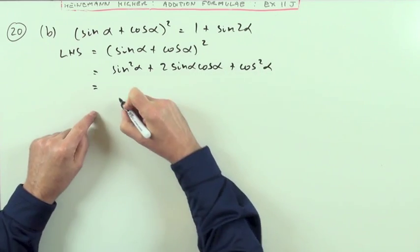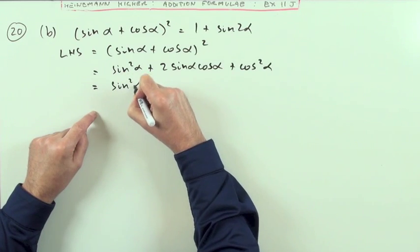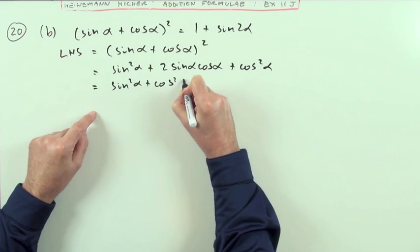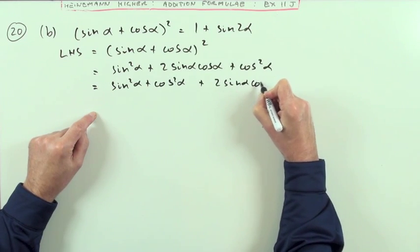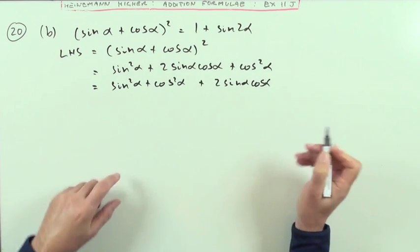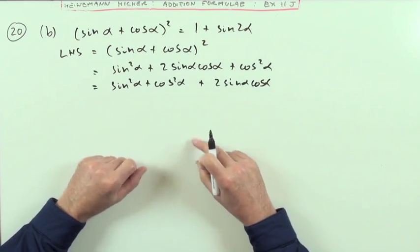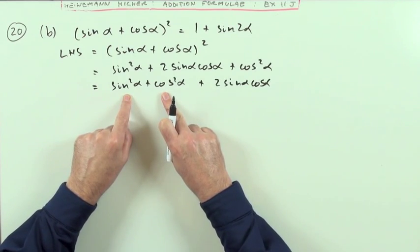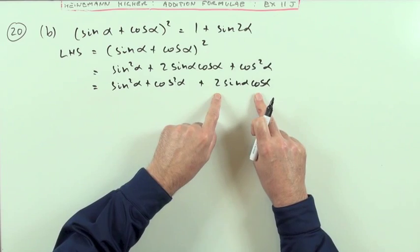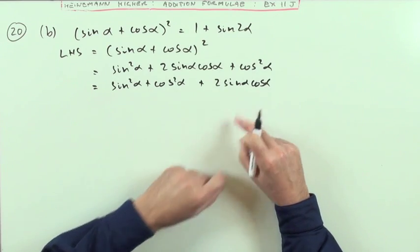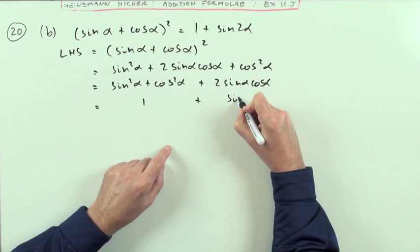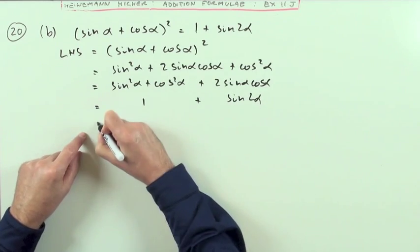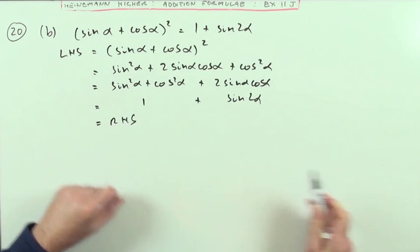I'll take these two terms together. I'll take sin squared alpha and cos squared alpha together and leave the 2 sin alpha cos alpha at the end, because I recognize the two parts. I know that sin squared plus cos squared makes 1, and I know that 2 sin alpha cos alpha is the expansion of sin 2 alpha. So that just equals 1 plus, and that part is sin 2 alpha, which equals the right-hand side.